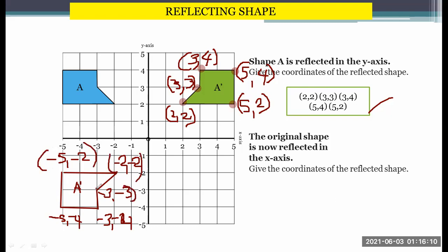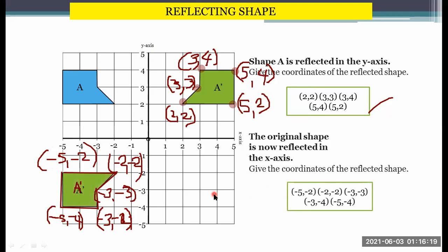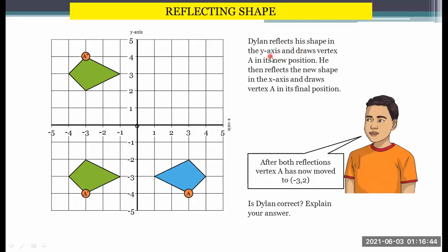So let's name them: (-5, -2), (-2, -2), (-3, -3), (-3, -4), and (-5, -4). Can you follow? Now, Dylan reflects his shape in the y-axis and draws vertex A. He then reflects the new shape in the x-axis and draws vertex A in its final position. After both reflections, vertex A has moved to (-3, -2). Is Dylan correct? Explain your answer.